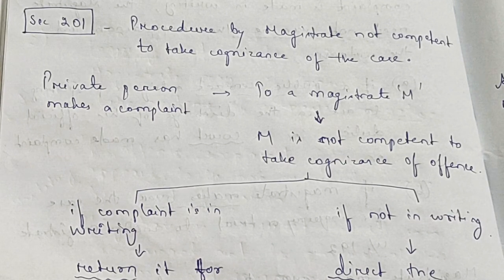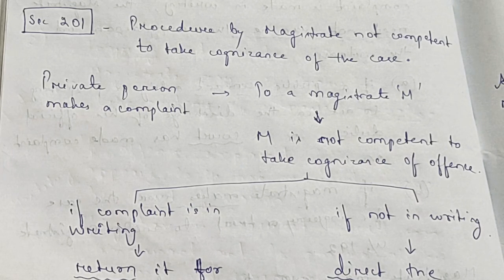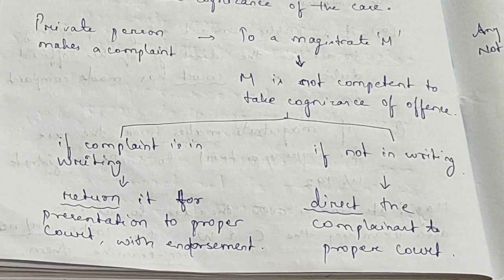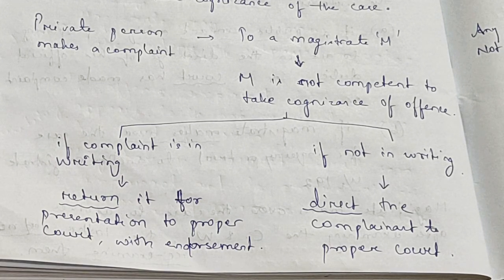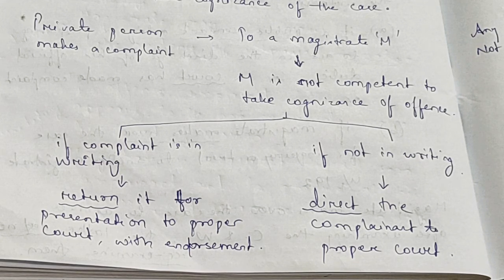Now let's see Section 201, which deals with the procedure by a magistrate not competent to take cognizance of the case. What happens when a complaint is made to a magistrate and he is not competent to take cognizance? The section says: when a private person makes a complaint to a magistrate M, and M is not competent to take cognizance, two cases arise. Firstly, if the complaint is in writing, M will return it for presentation to the proper court with an endorsement. If the complaint is not in writing, he will direct the complainant to the proper court.